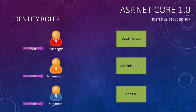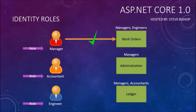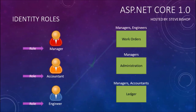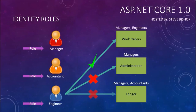Within our different application sections we can specify which user types or roles should have access to that section. For example, our managers should be able to have access to the work orders, the administration page, as well as possibly the ledger. But when it comes to our engineers, we probably just want them to have access to the work orders and not the administration page or the ledger.